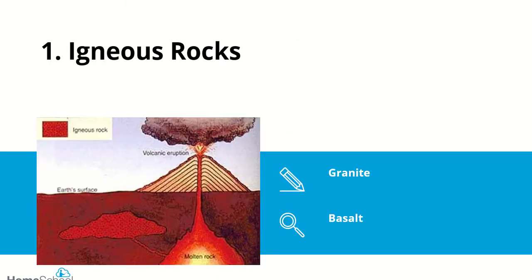Moving on, we're going to look in detail at igneous rocks and how they're formed. The word igneous comes from the word ignite — to ignite something. If you think about it, to ignite something you need heat, and that's how igneous rocks are formed. Igneous rocks are linked to volcanoes, and we know that lava can come out of a volcano and creates new land.